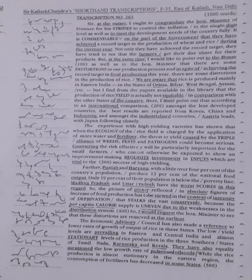Further, Punjab and Haryana, with a little over 4% of the country's population, produce 13% of the national food output. Only 19% of their population is below the poverty line. Madhya Pradesh and Uttar Pradesh have the worst scores in this regard.